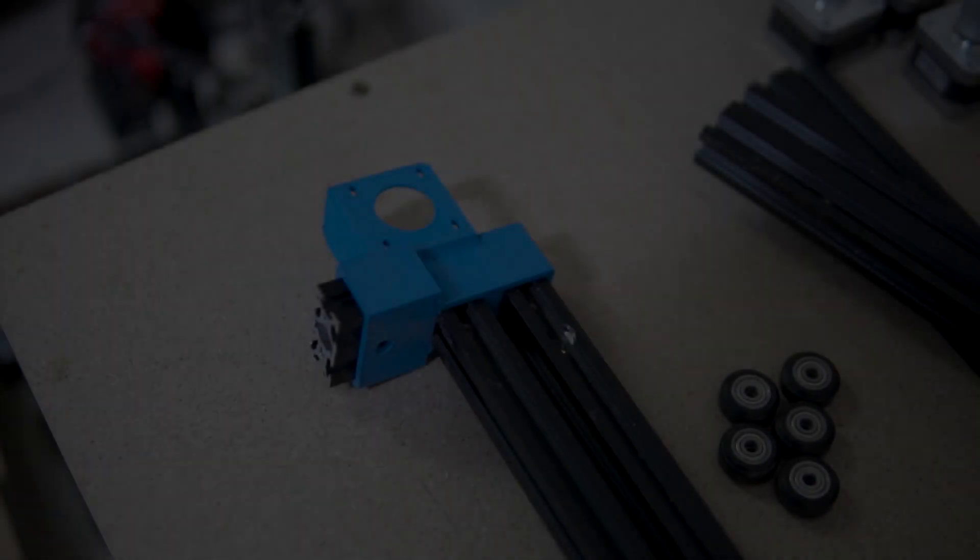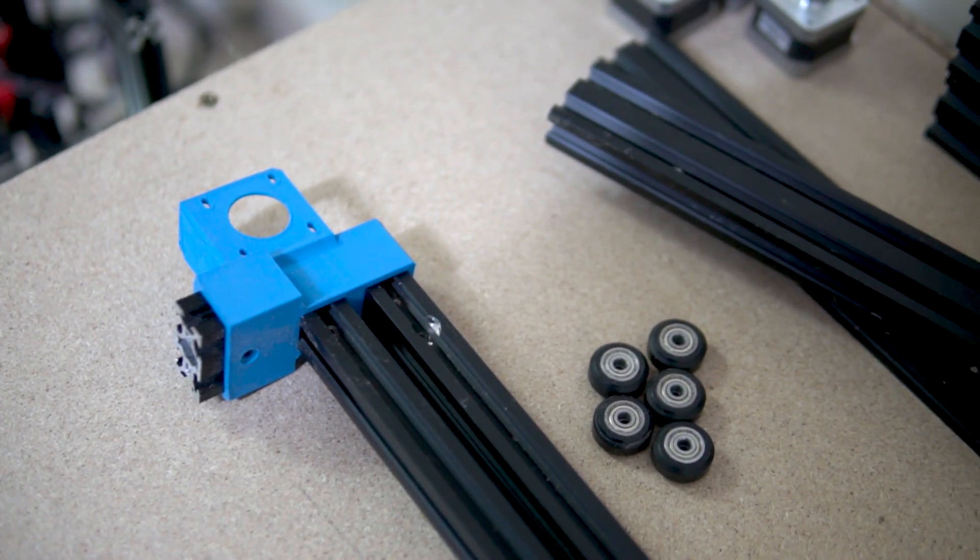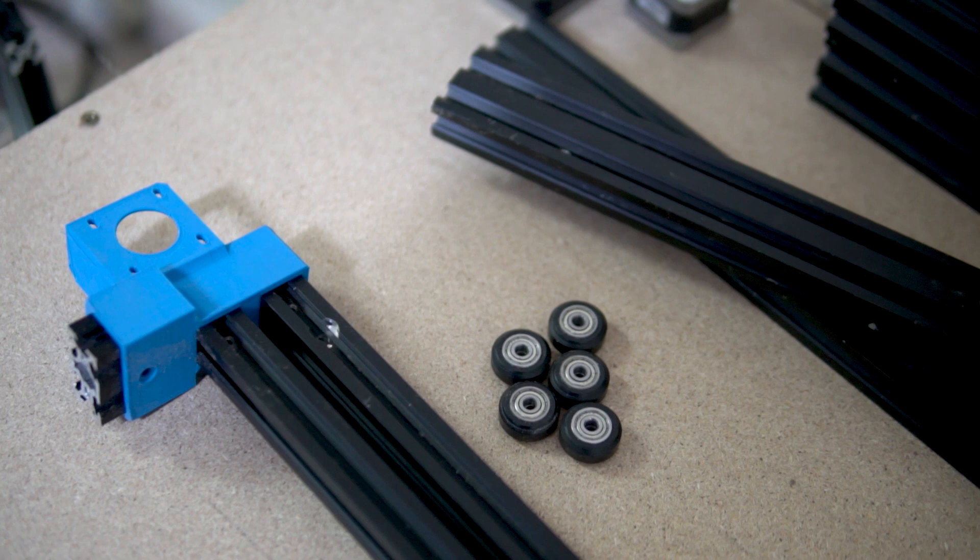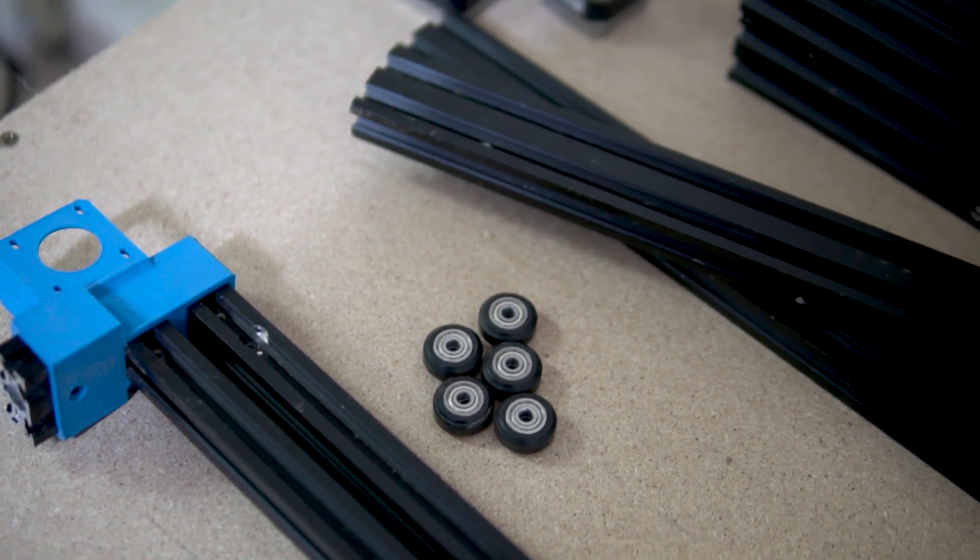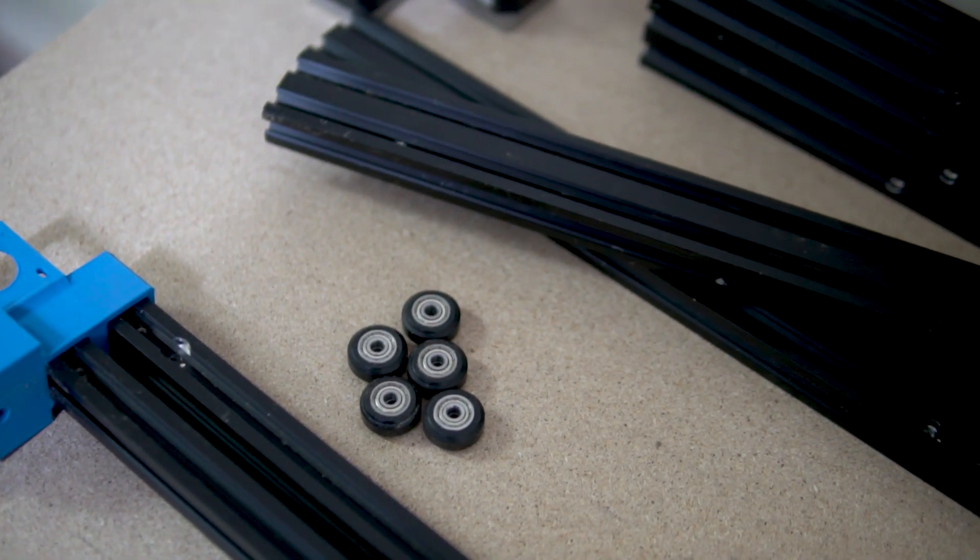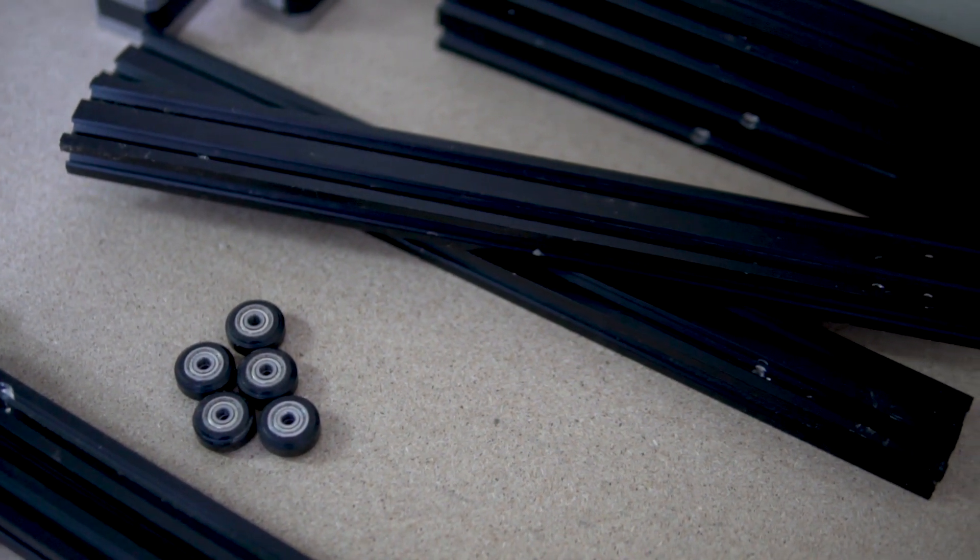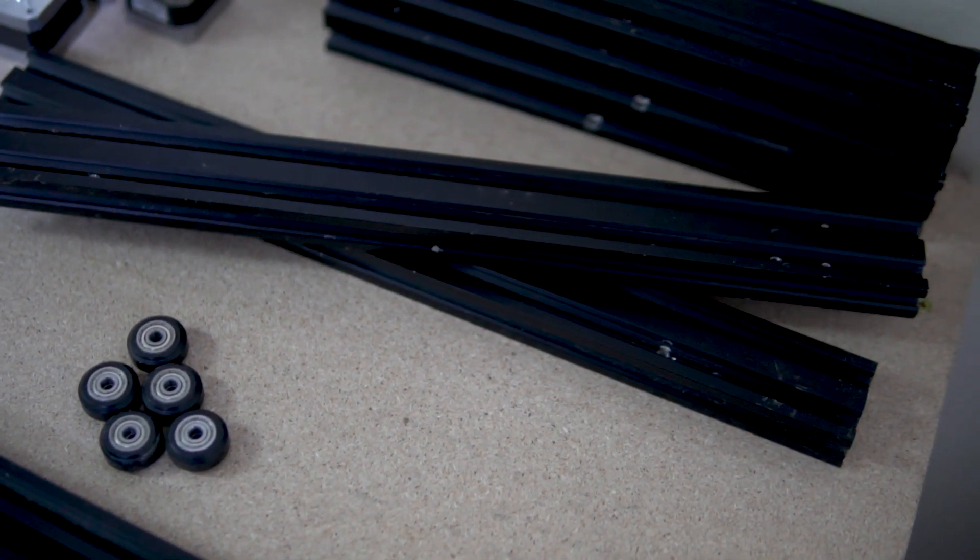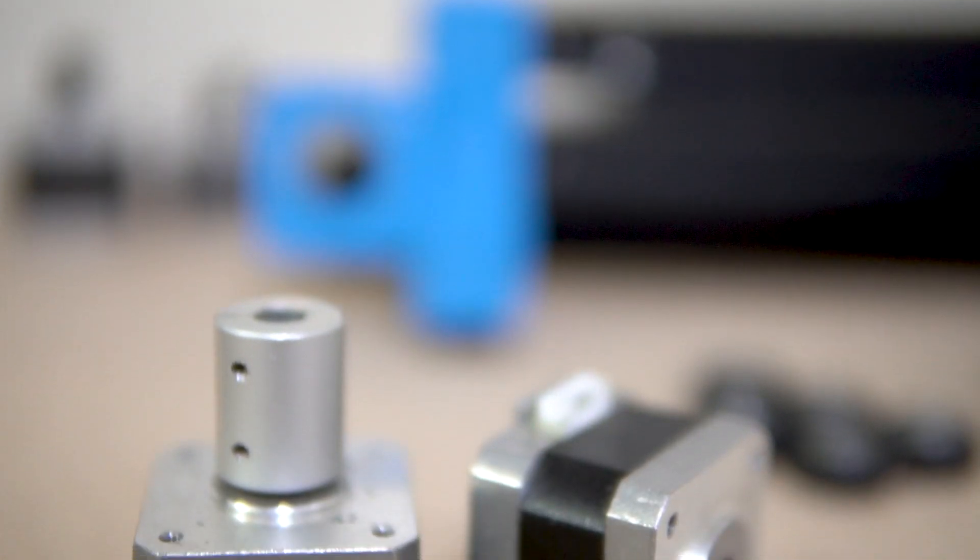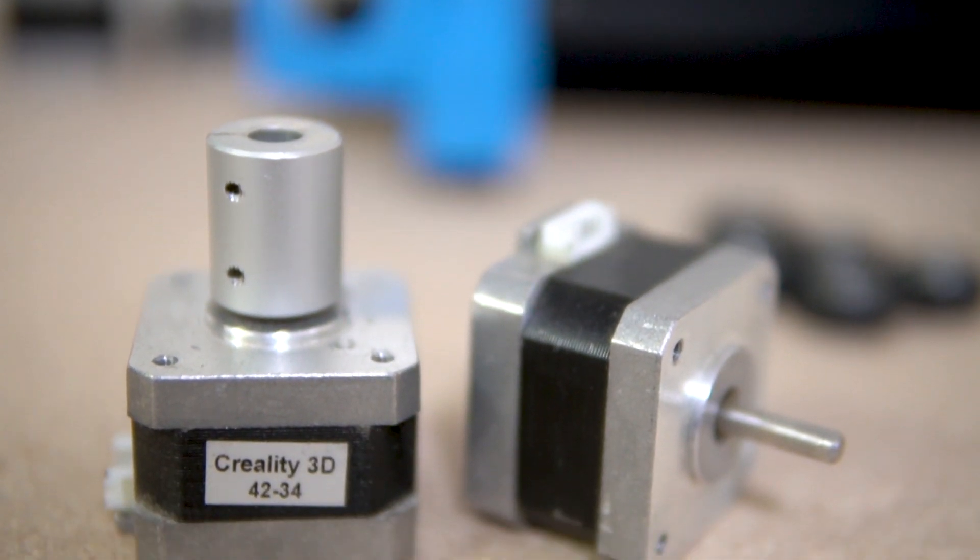After salvaging almost all of its parts, even some screws to keep the cost as low as possible, we headed out and bought some additional parts like a Dremel, two GT2 pulleys, lead screw, an Arduino Uno, CNC shield, some drivers, a couple of screws and some bearings. Then we were ready to start creating our very own CNC machine.